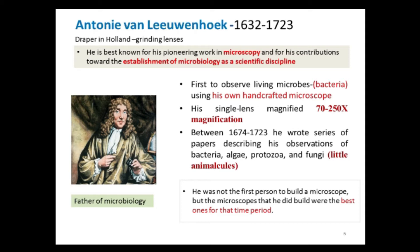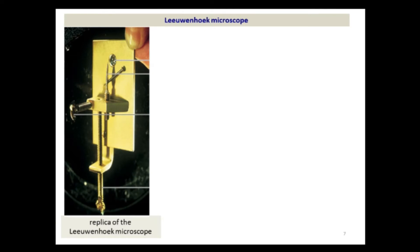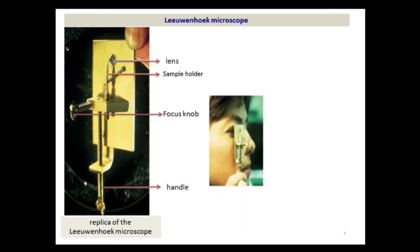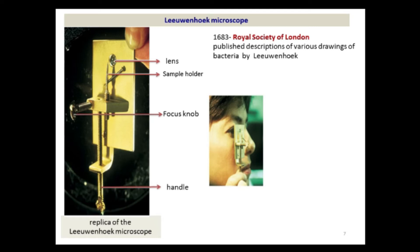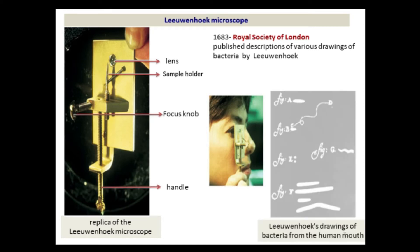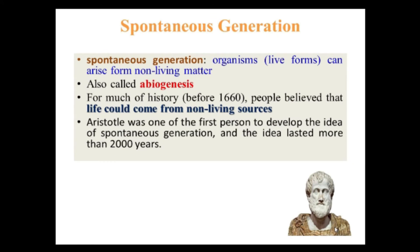Even though van Leeuwenhoek was not the first person to build a microscope, the microscopes he built were the best for that time period. The credit for the first microscope is usually given to Zacharias Janssen. Here is a replica of the Leeuwenhoek microscope with its parts: the lens, the sample holder, the focus knob, and the handle. In 1683, the Royal Society of London published descriptions and drawings of bacteria by Leeuwenhoek, including drawings of bacteria from the human mouth.